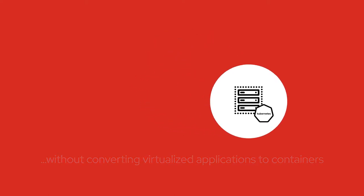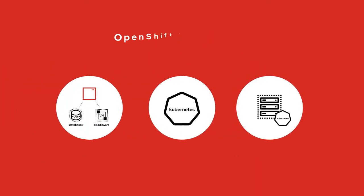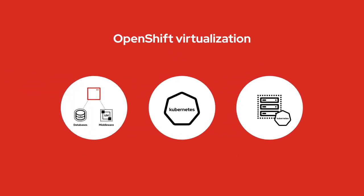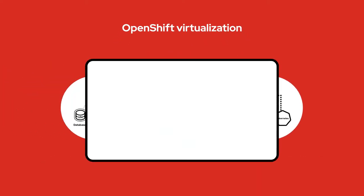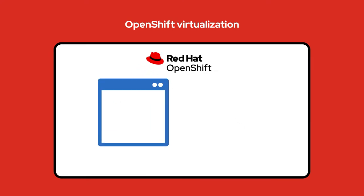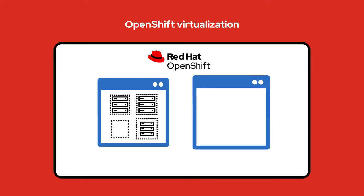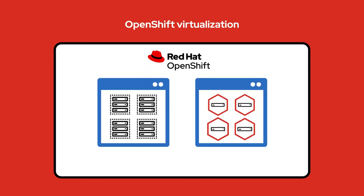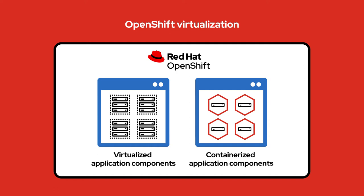You can do exactly that with OpenShift Virtualization, a feature of Red Hat OpenShift that lets you run and manage applications consisting of both virtual machines and containers side-by-side.